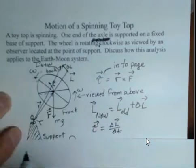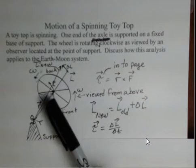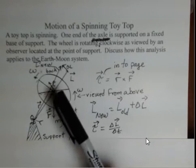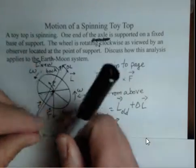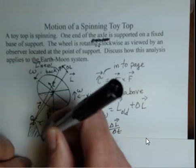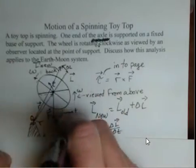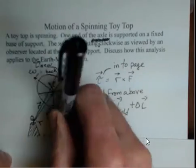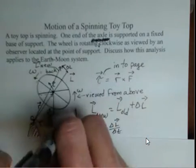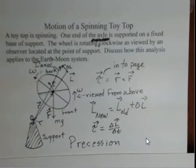The angular momentum vector is now pointed in a different direction. The axis of the toy top is pointed in a different direction. And this toy top is going to, if it was originally like this, it's going to shift over a little bit and continue to move around in a circle in space. The axis of the toy top is going to wobble in space. Perhaps you've seen that motion. That motion is called precession.